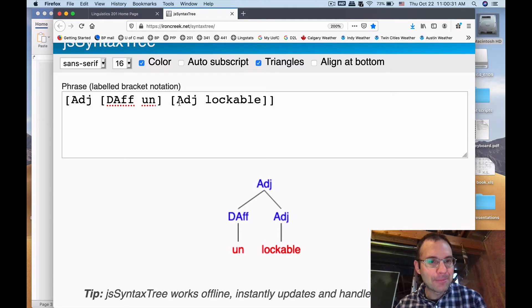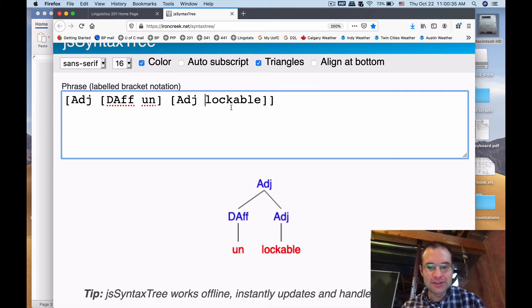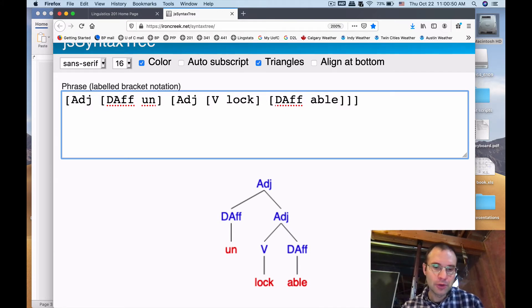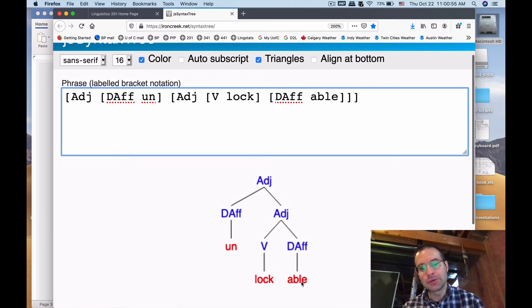So let's break it down with the un splitting off first. We have a derivational affix there. It'll label the un part as a derivational affix in the tree and then lockable separate. So what's lockable? It's an adjective. And lock is the verb, and then able is another derivational affix. So lock attaches to able to start off with to make lockable. That's an adjective. And then we add un onto that. So that means something that's not lockable.